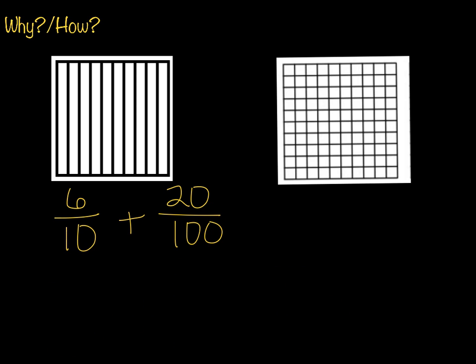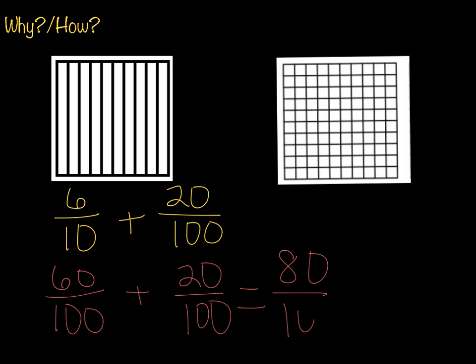Let's look at this example. Six tenths plus twenty one-hundredths. So six tenths is going to be equivalent to what? Six tenths is going to be equivalent to sixty one-hundredths plus twenty one-hundredths. So sixty plus twenty equals eighty. And we bring our denominator over. As simple as that.